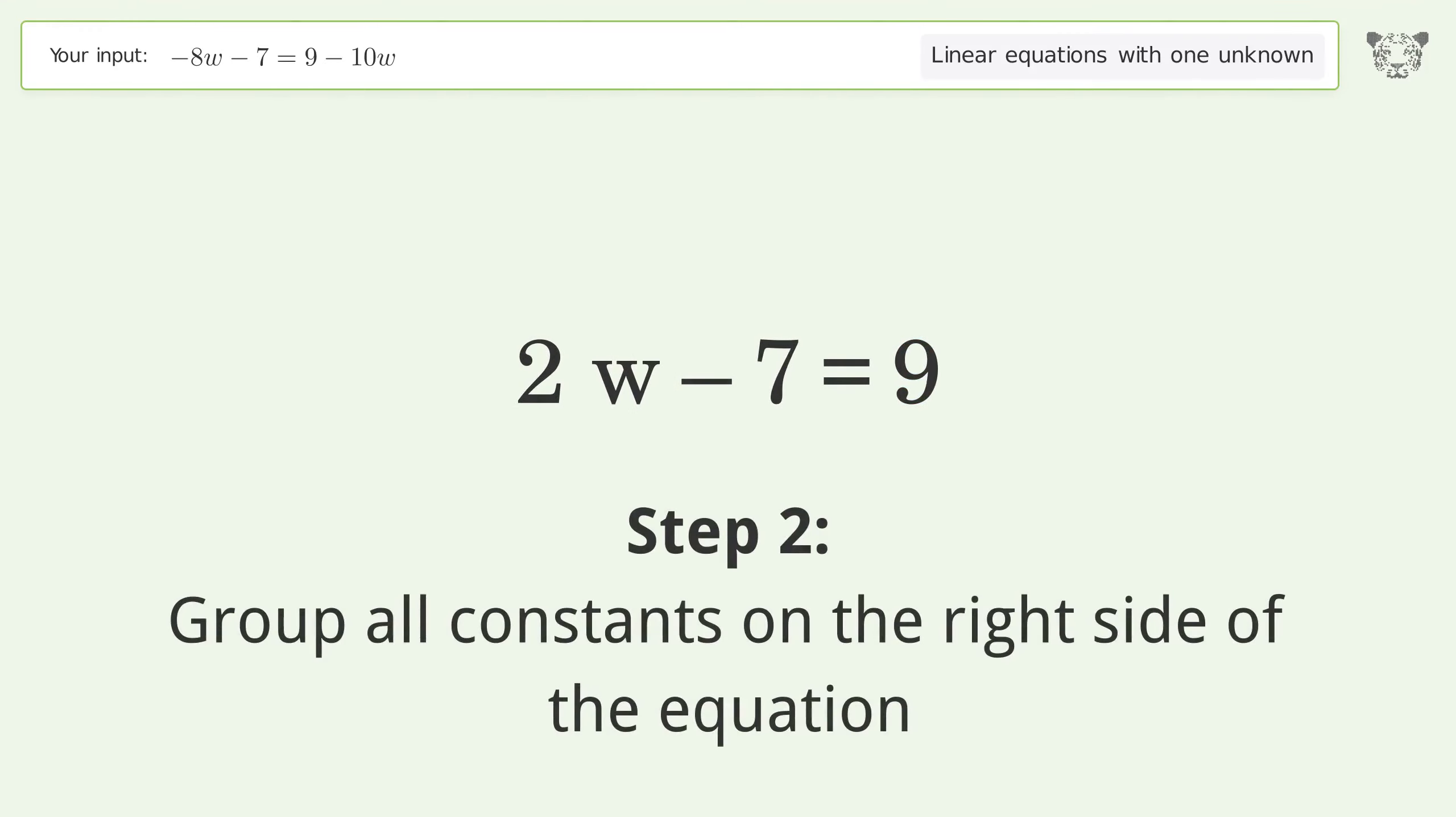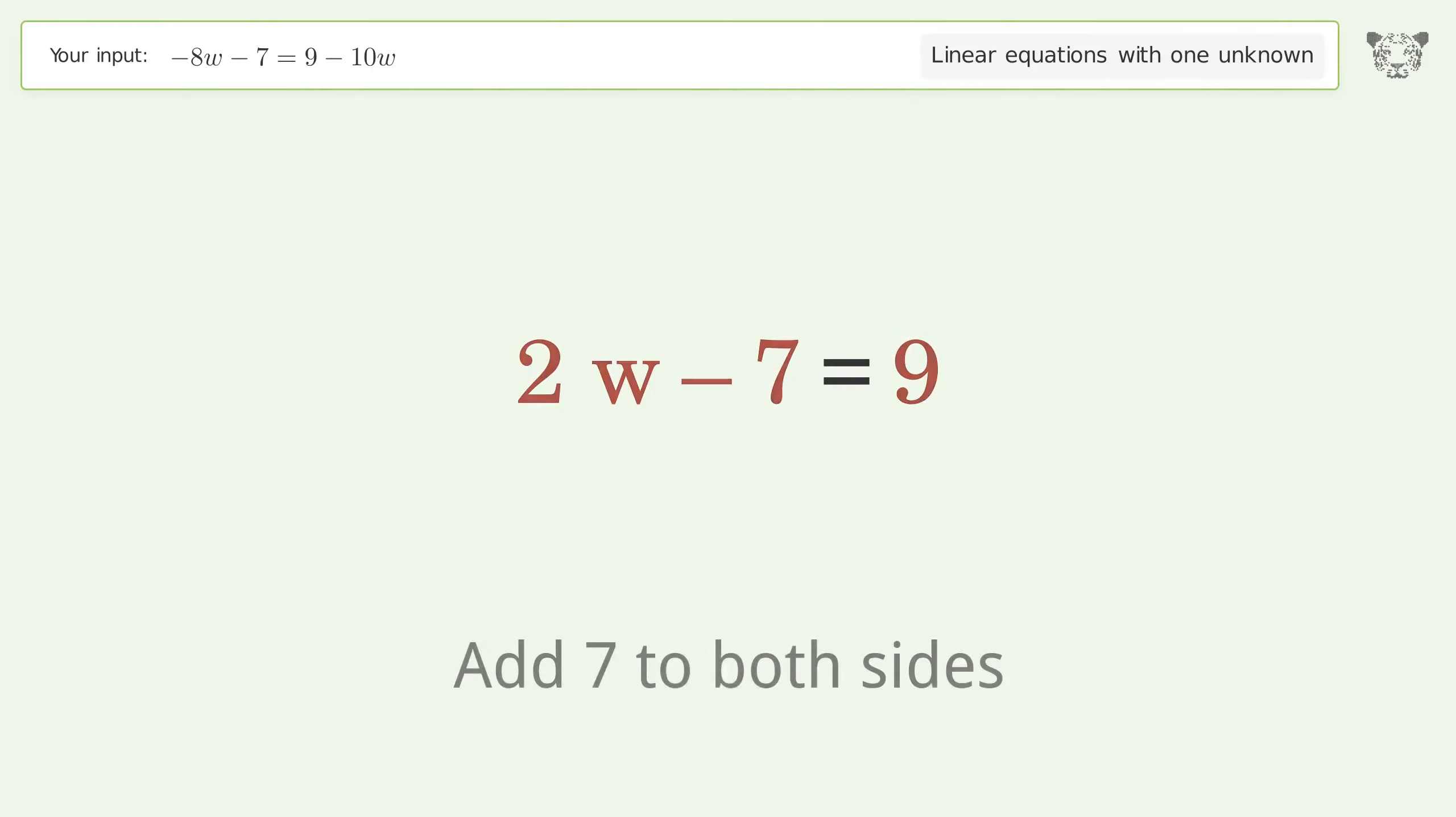Group all constants on the right side of the equation. Add 7 to both sides.